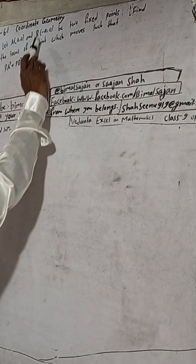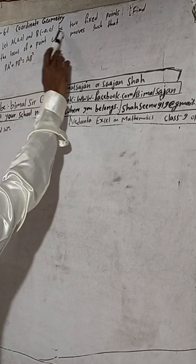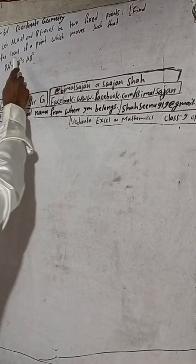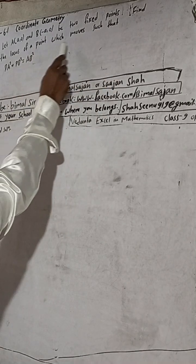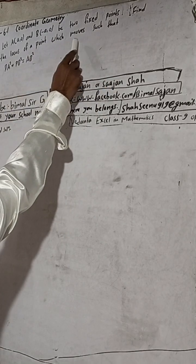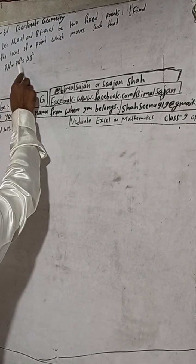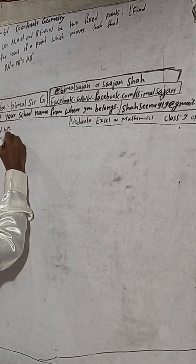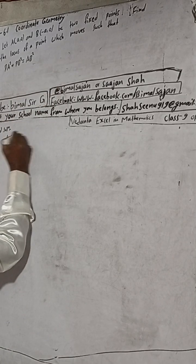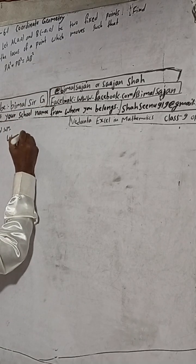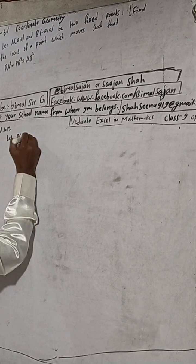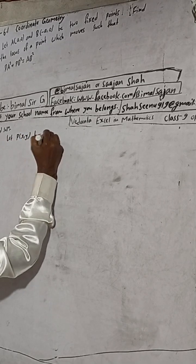...B(−a, 0) be two fixed points. Find the locus of a point which moves such that PA² + PB² = AB². So now, let P(x, y) be...